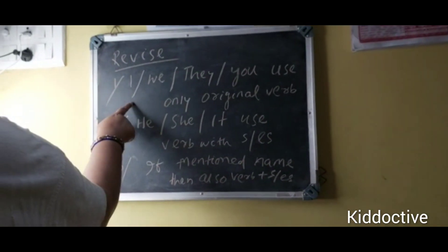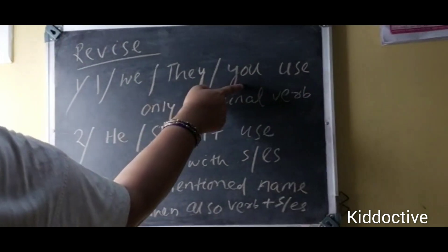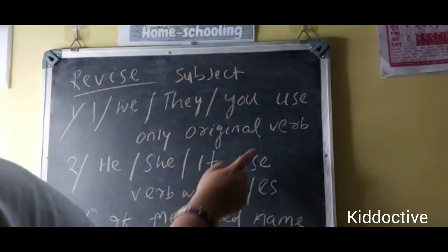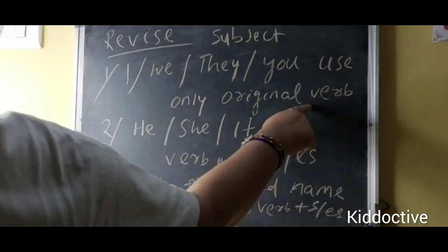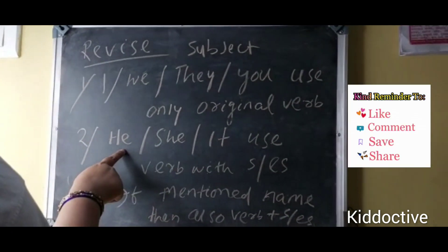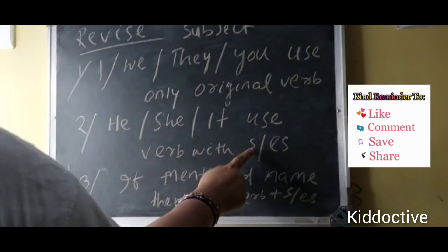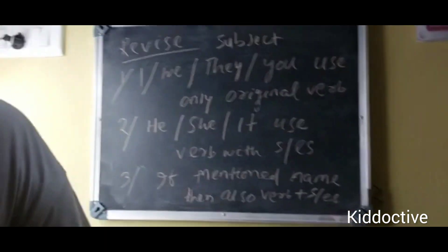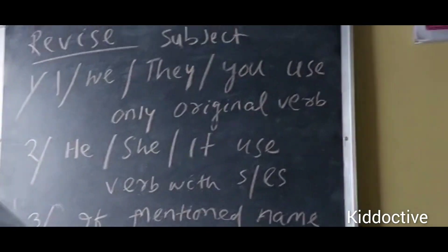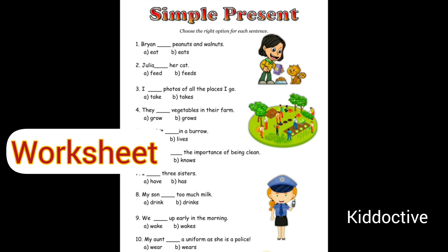Now for revision: the first rule is with 'I', 'we', 'they', 'you' as subject, use the original form of the verb. The second rule is with 'he', 'she', 'it' as subject, use the verb with 's' or 'es'. The third rule is if a name is mentioned, also use verb plus 's' or 'es'. Now here is the worksheet.